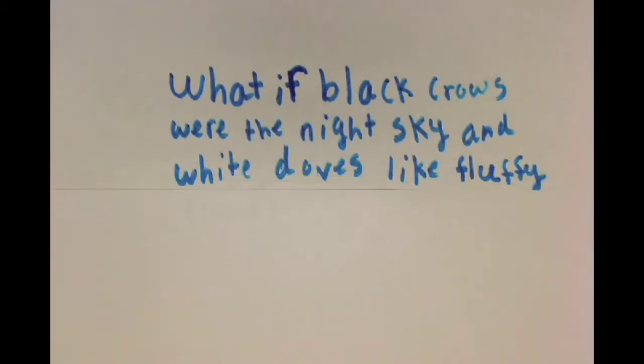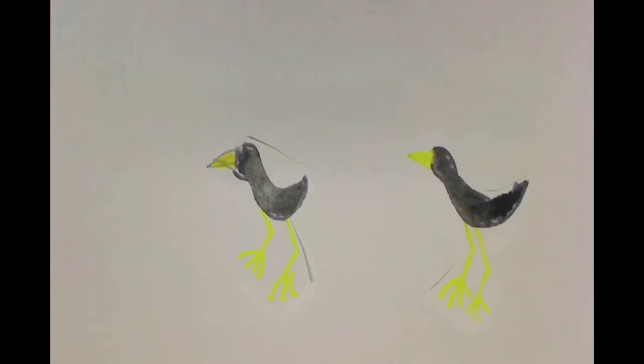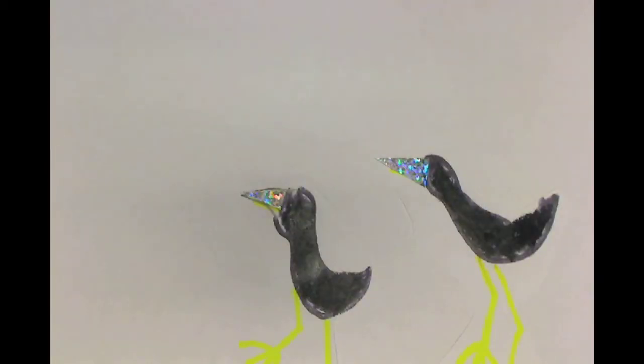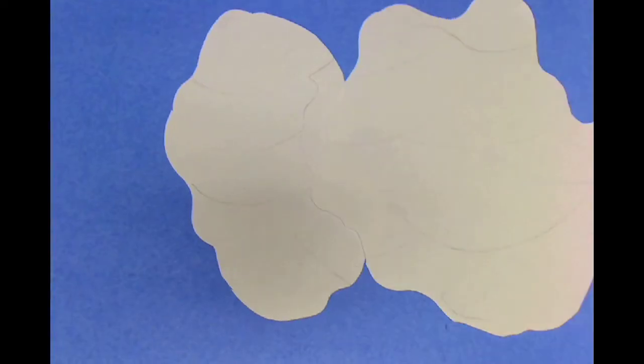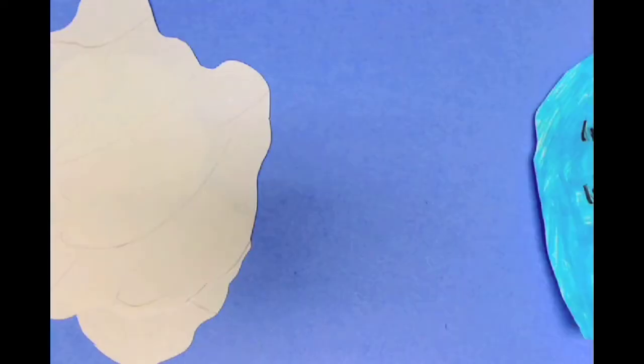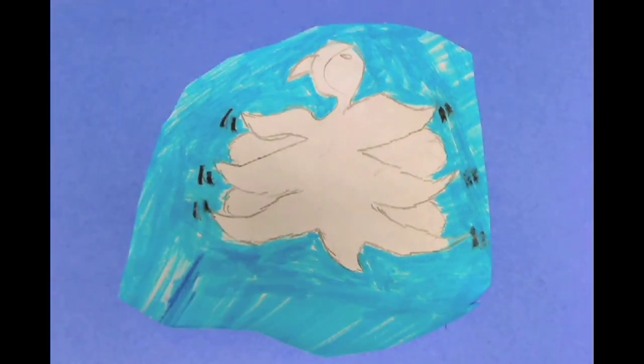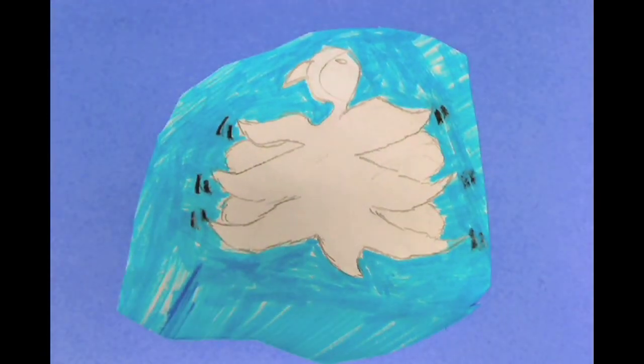What if black crows were the night sky and white doves were fluffy clouds? One by one, as the crows went to sleep, the sky grew darker. The black crow's beaks glistened as that was the stars. Early in the morning, the white doves would wake up and move slowly but gracefully. They would stay together and perform pictures in the baby blue sky.